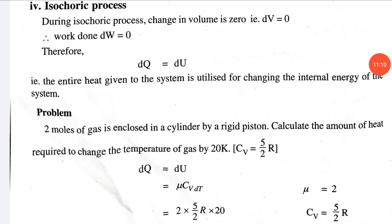Fourth application: the isochoric process. In the isochoric process, the volume is constant, so the change in volume dV equals zero. Since volume does not change, work done dW equals zero. Applying the first law, dQ equals dU plus dW becomes dQ equals dU — the heat supplied equals the change in internal energy of the system.